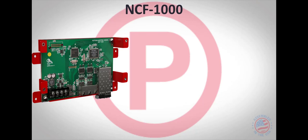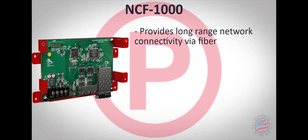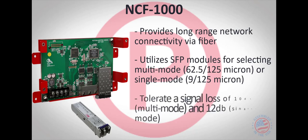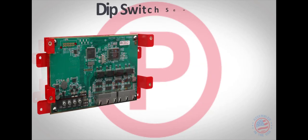The NCF-1000 provides long-range network connectivity using fiber optic cabling. These cards utilize SFP, or Small Form Pluggable, modules to integrate with 62.5x125 micron multimode fiber or 9x125 single-mode fiber. The cards allow for a signal loss of 10 dB for multimode fiber and 12 dB for single-mode fiber.